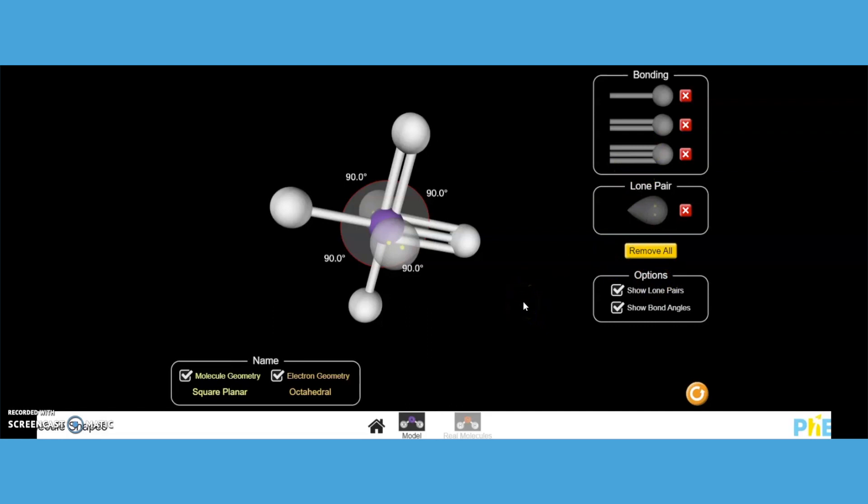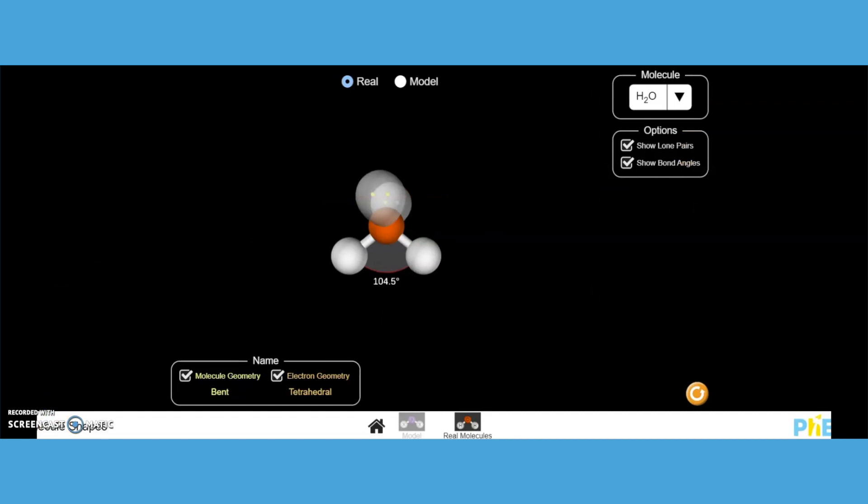I'm going to walk you through what happens when they get to the real molecule phase. Now we're in part three of our molecular shape PhET simulation. Notice the tools are the same in terms of options of showing unshared pairs, the bond angles. Make sure they're clicking on molecular geometry and electron geometry, and they can easily see.